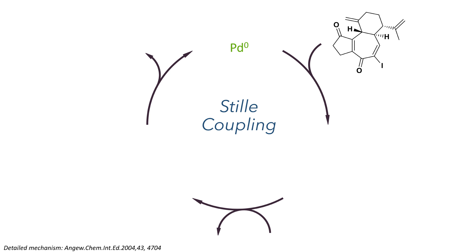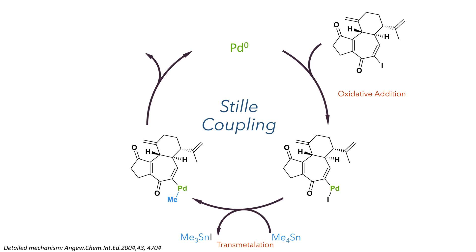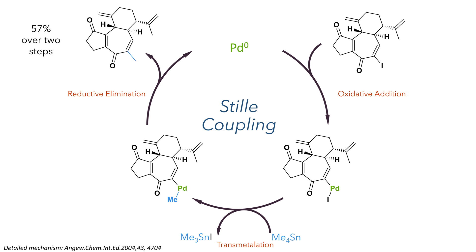This newly installed iodide was required for the next reaction, which was a Stille coupling. This reaction starts with the oxidative addition of a palladium(0) species into the carbon-iodine bond, where it then undergoes transmetalation with tetramethyltin, forming a methyl palladium species which then undergoes reductive elimination to form the methylated product in a 57% yield over two steps. I've linked a paper below which goes through the mechanism of this reaction in much more detail.